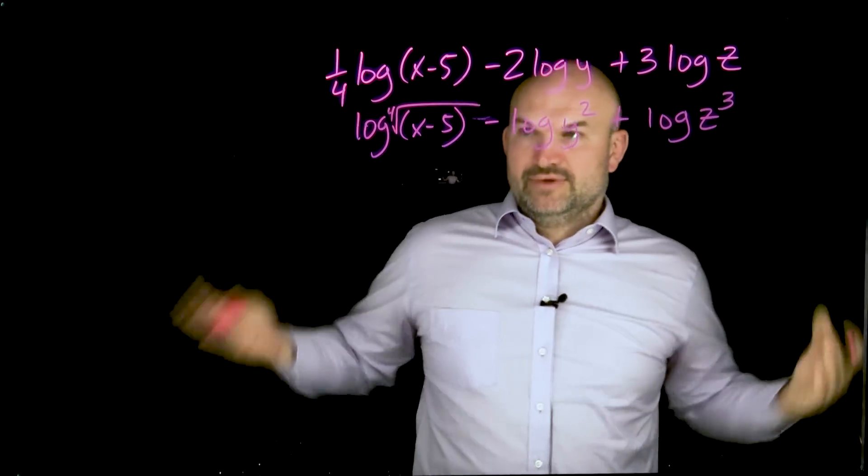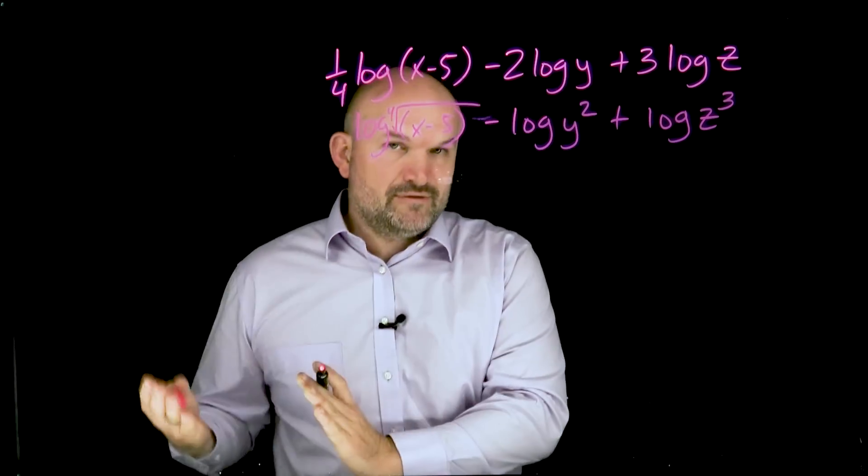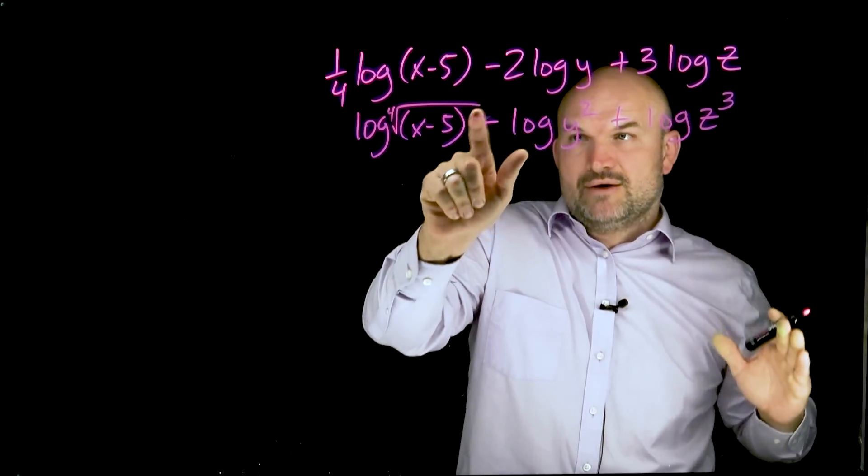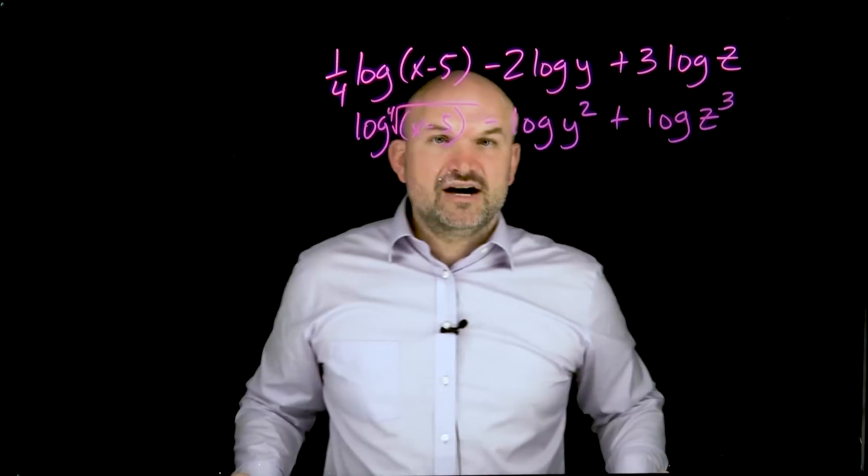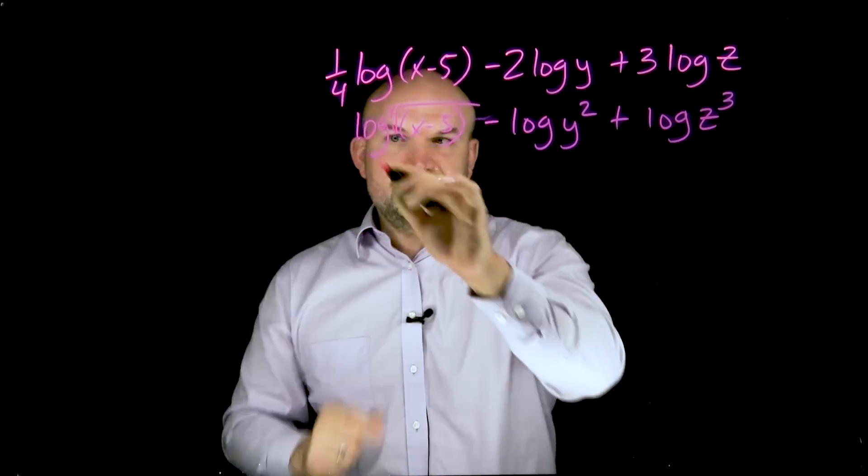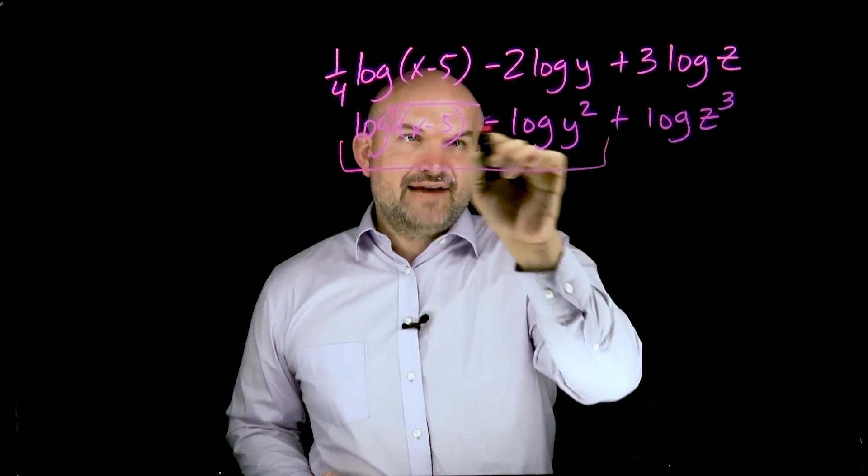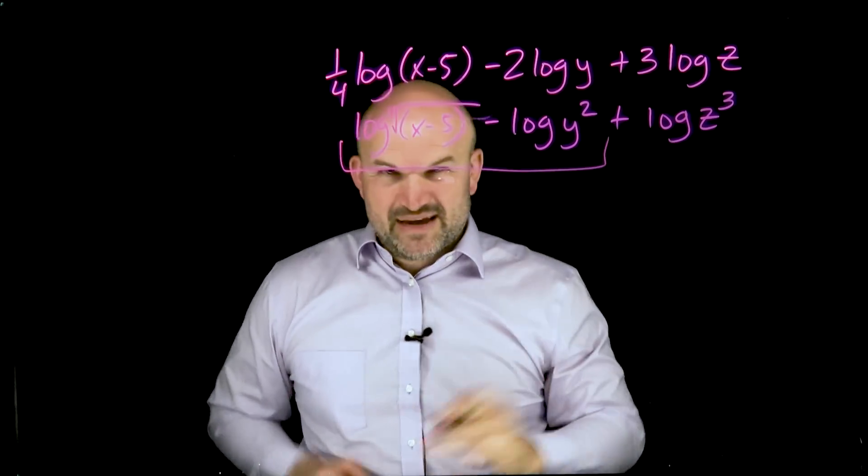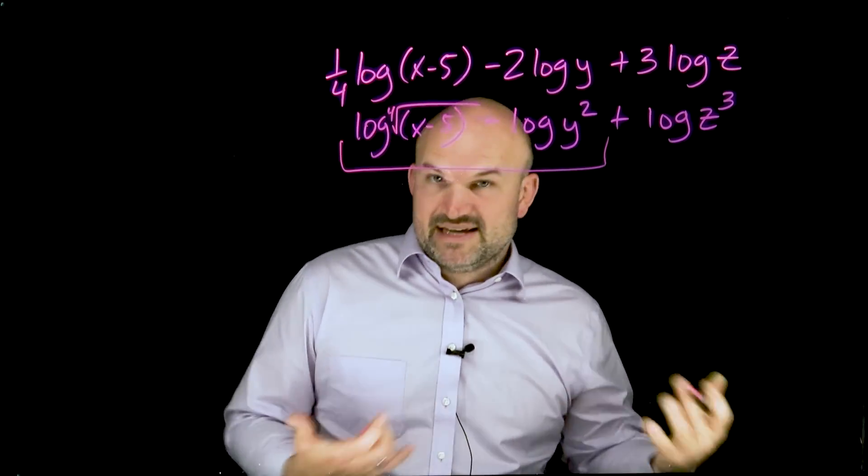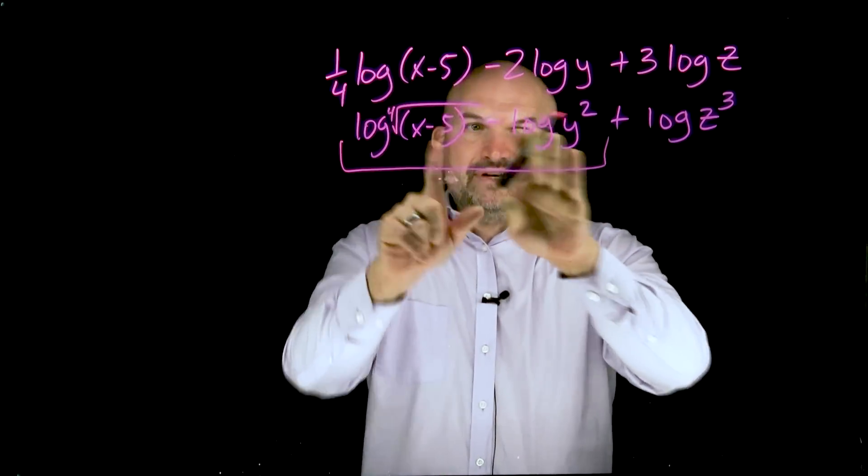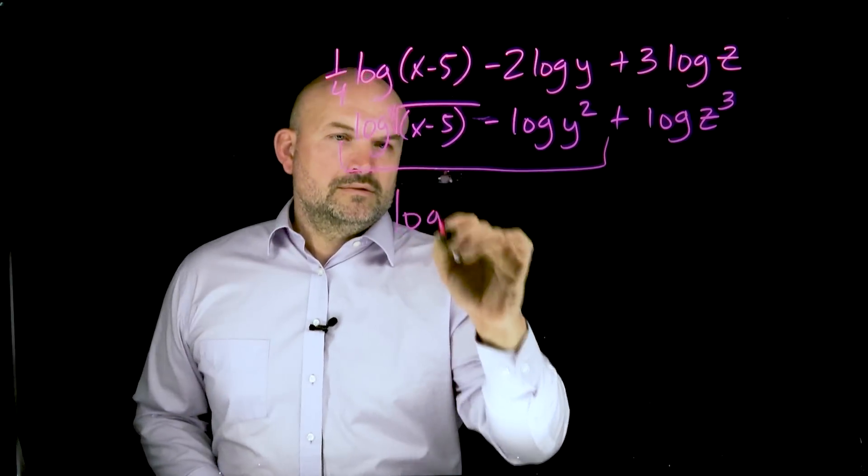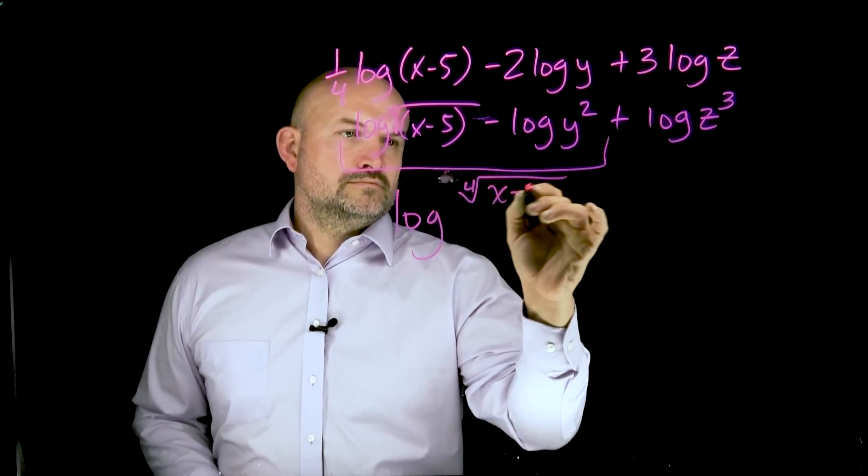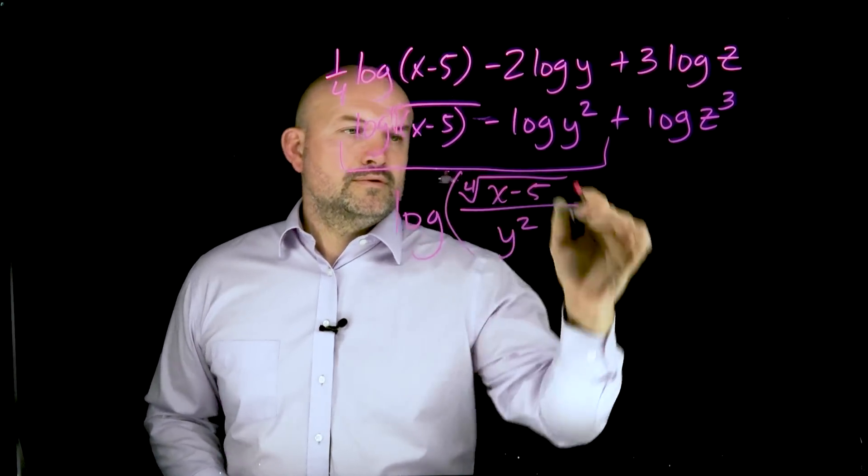So now we have everything. We used the power rule, took whatever's in front of my logarithm, rewrote it as a power. Now, all I'm simply going to do is work from left to right, applying my condensing. So I'm going to work on these first two, and I see that I have the difference of two logarithms. They have the same base, which in this case we can understand is base 10. And so therefore, it's going to be the difference of these two logarithms written as one single log.